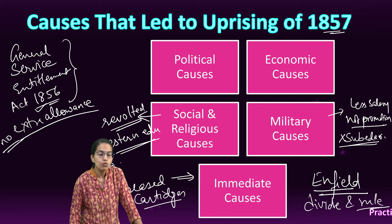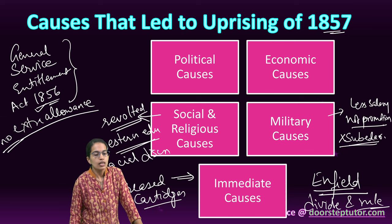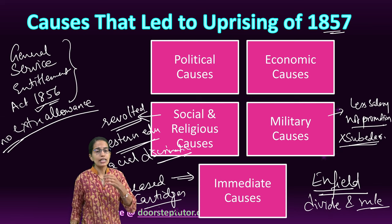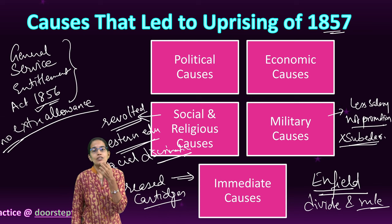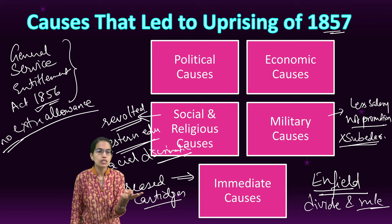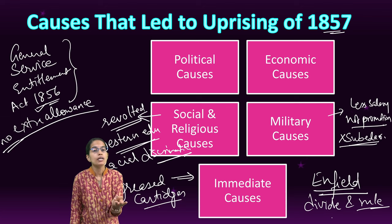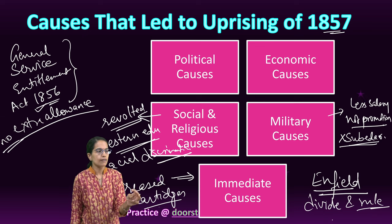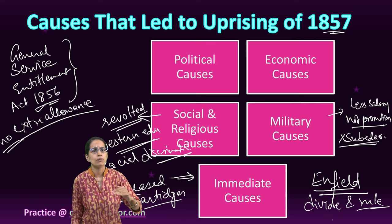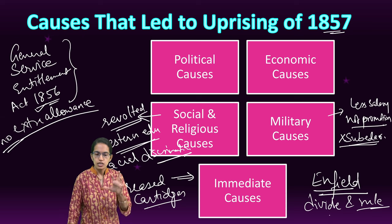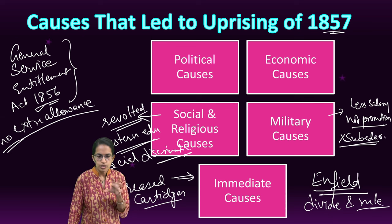Last but not least, there was racial discrimination prevalent in society. As clearly mentioned in Macaulay's words when he talked about the objectives of education — he said that they wanted people to be Indian by blood and color, but British by their talent and intellect. That clearly signifies they were trying to separate people based on racial aspects. So those were some of the racial and social-religious causes.